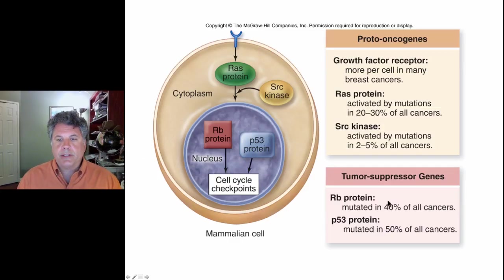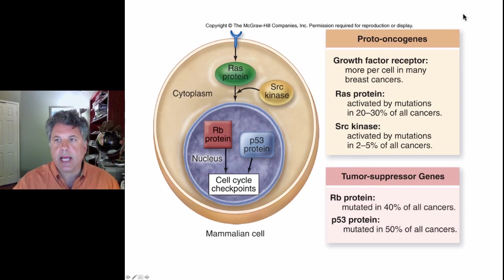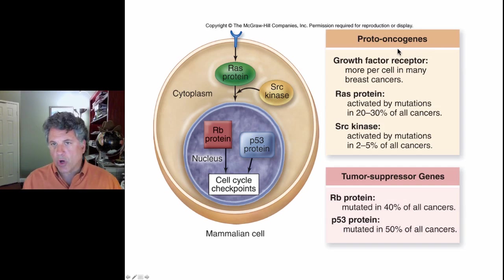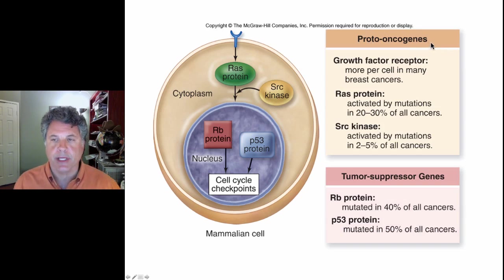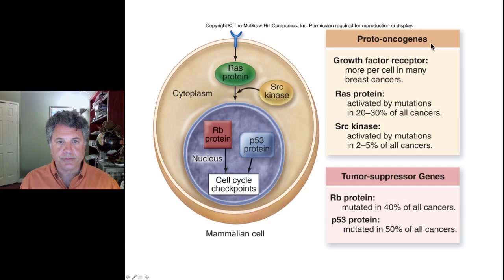We left off talking about tumor suppressor genes and now we're moving on to proto-oncogenes, which are a second class of genes that can be mutated to cause mutant proteins that can lead to unrestrained proliferation of cells and therefore cause tumors. Let's talk about some examples.